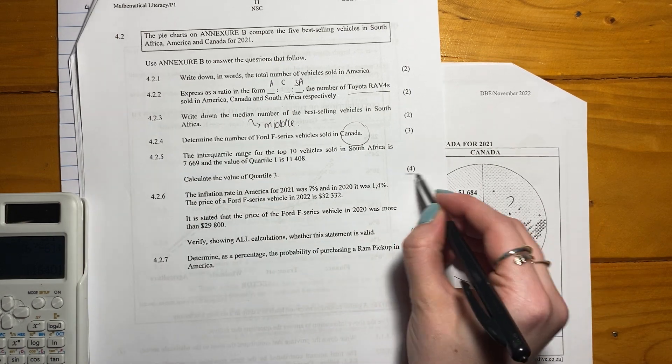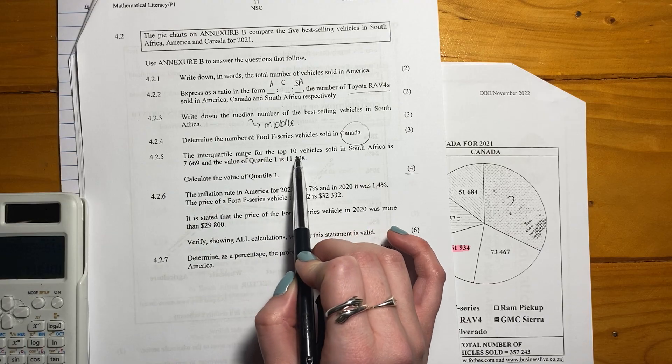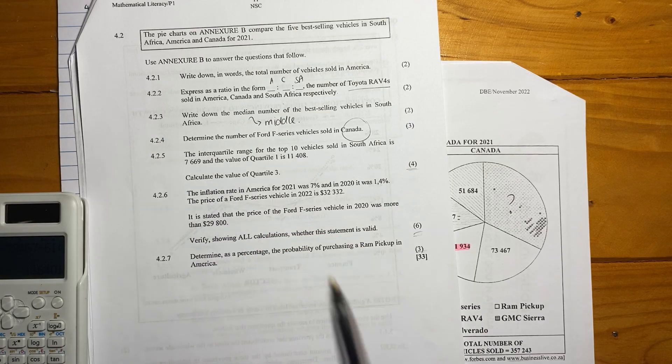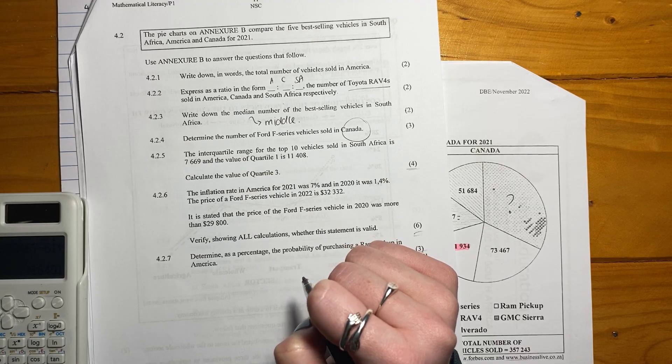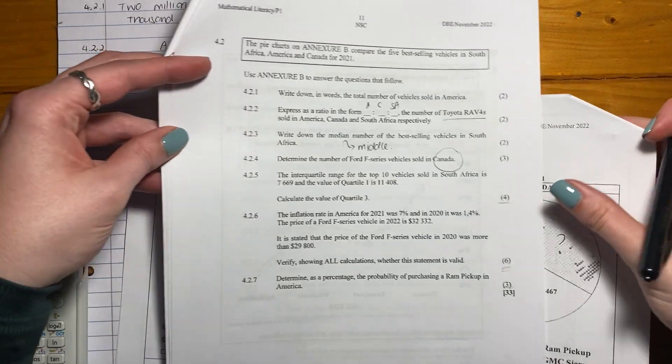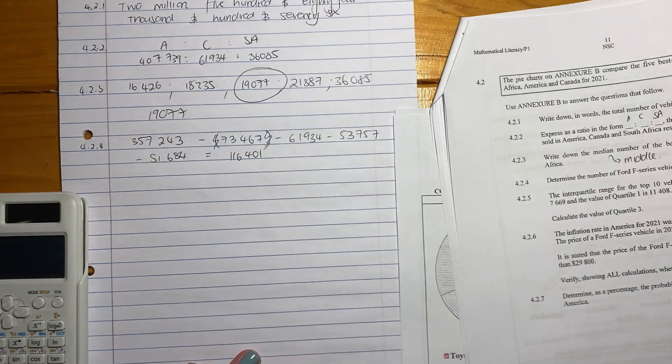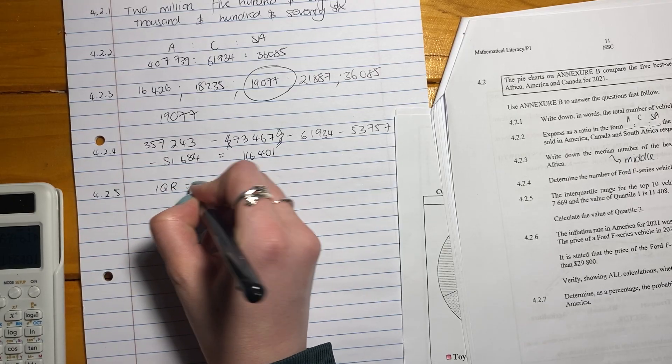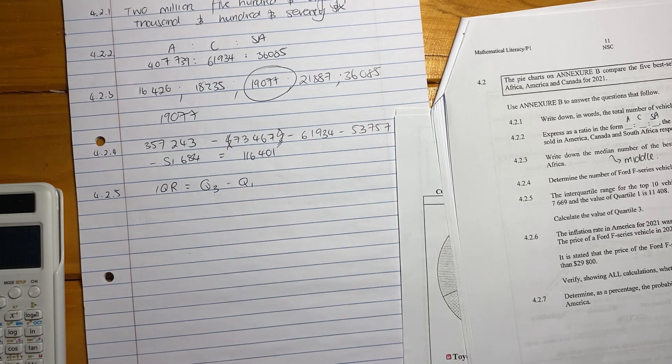Now we get to the bigger mark questions. So look, we have a 4, we have a 6, and we have a 3. So this is where there's going to be a little bit more calculation work. The inter-quartile range for the top 10 vehicles sold in South Africa is 7,669. And the value of the quartile 1 is 11,408. Calculate the value of quartile 3. Now students see this and they're like, what's going on? That's fair enough. But let's just always go back to basics. The inter-quartile range is quartile 3 minus quartile 1. That's what the inter-quartile range is as definition. If you don't know that, learn it.